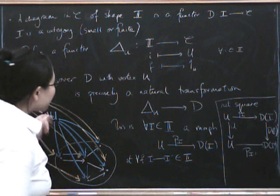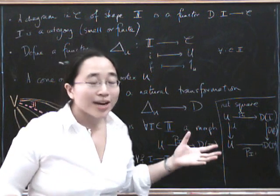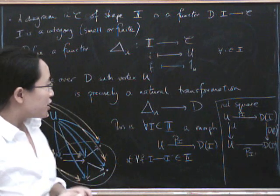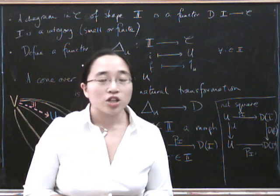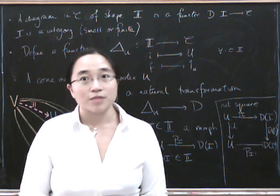So a cone with vertex U is indeed a natural transformation from here to here. And the naturality condition cleverly encodes the commuting conditions of the cone. So what we'll do next time is we'll show how to identify universal cones, that is, limits over the diagram D.